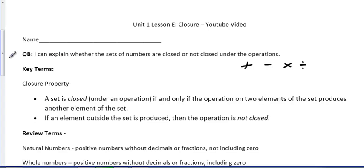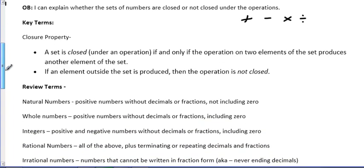Closure property: the best way to define it is by using the actual result. So sets of numbers are either closed or not closed. A set is closed under an operation if and only if the operation on two elements of the set produces an element from another set.